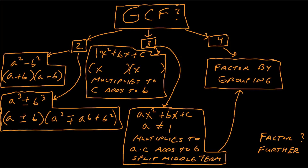Sometimes students overlook this and it makes the problem a lot more challenging than it needs to be. After you do that, you basically decide: do you have two terms, three terms, or four terms — keeping in mind that terms are separated by a minus sign or a plus sign. If you have two terms, you have to decide: do you have a difference of two squares, or a sum or difference of two cubes? You go ahead and factor it using these formulas.